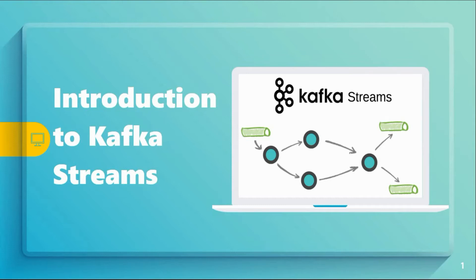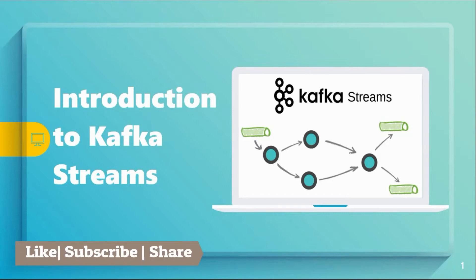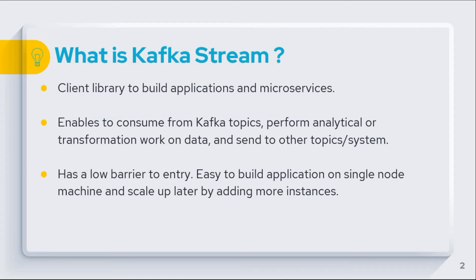Hi guys, this is Vishal. In this video I'm going to talk about what is Kafka Streams and its features, what is stream processing topology, and ways to define it. Kafka Streams is a client library for building applications and microservices, specially where the input and output are stored in the Kafka clusters. It enables consuming from Kafka topics, performing analytical or transformation work on data, and potentially sending it to another topic or system.